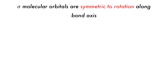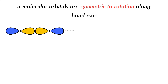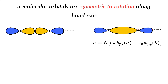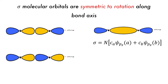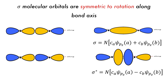Sigma bonds formed from P orbitals are formed in a similar manner. If there are two in-phase P orbitals, they will overlap to form a sigma bonding molecular orbital. If the two P orbitals are out of phase, then the overlap will be destabilizing, giving a sigma star anti-bonding orbital. Again, if these orbitals are then rotated around the Z axis, or the bonding axis, they will not change, confirming that they are sigma orbitals.